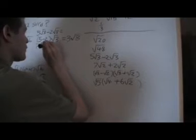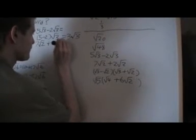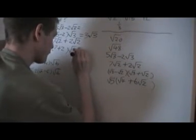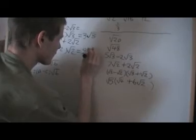Okay. And next one here I've got 7 root 2 plus 2 root 2. Using rule 2 I get that. Which one we'll add then we'll get 9 root 2.